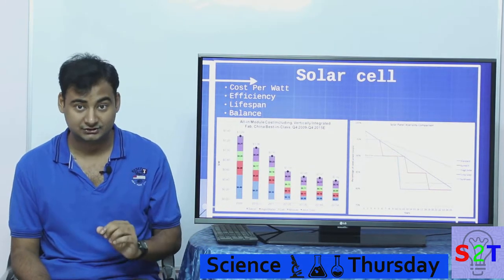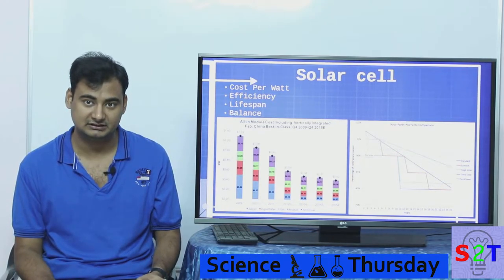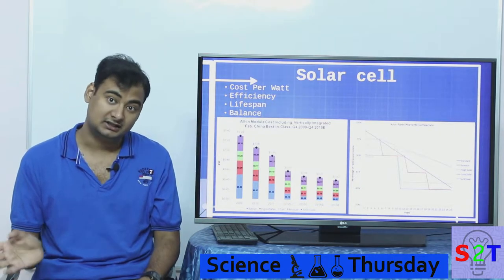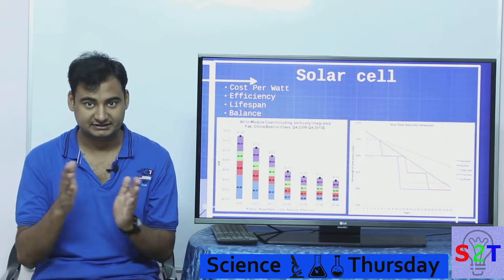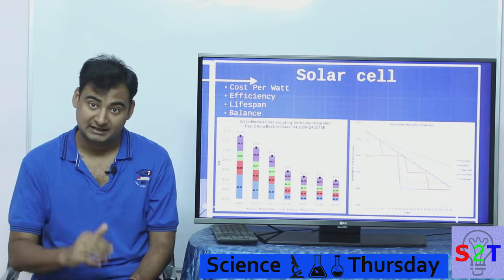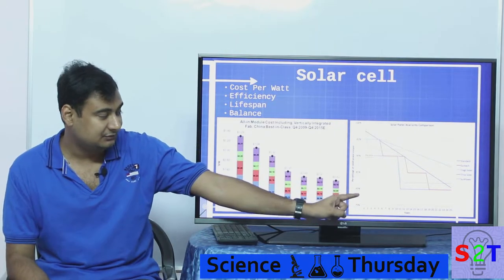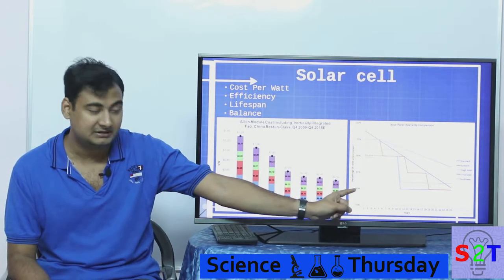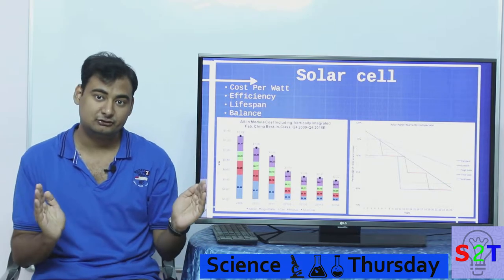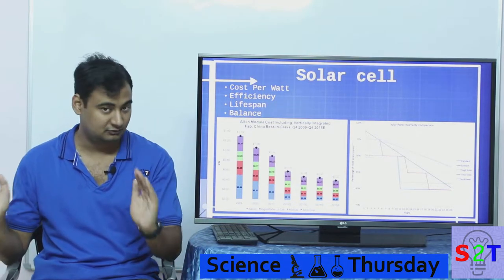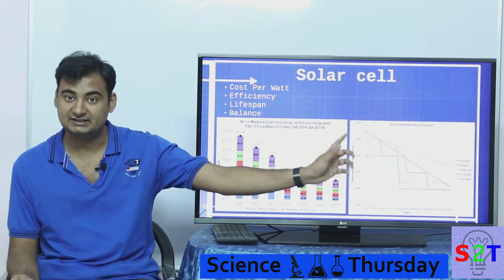The third factor is lifespan — often neglected for small-scale but very crucial for large-scale industrial applications. Earlier, solar cells would lose upwards of 1 to 5% capacity per year, so they wouldn't last very long. Nowadays, reputable manufacturers give warranties on capacity for 25 years, guaranteeing you will have upwards of 80% of the original output. So a 100-watt panel should still be an 80-watt panel 25 years from purchase.